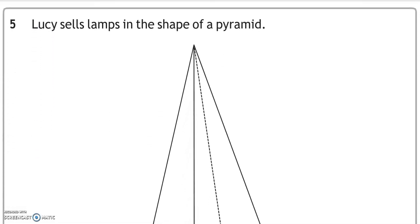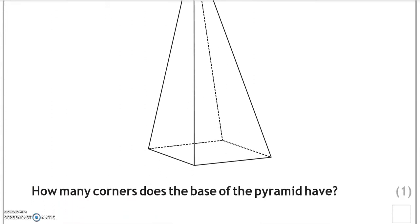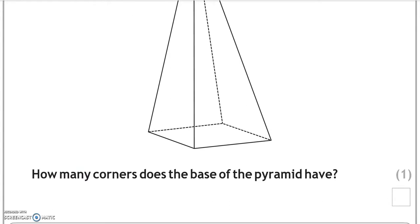Lucy sells lamps in the shape of a pyramid. How many corners does the base of the pyramid have? So looking at the base, there are 4 corners.